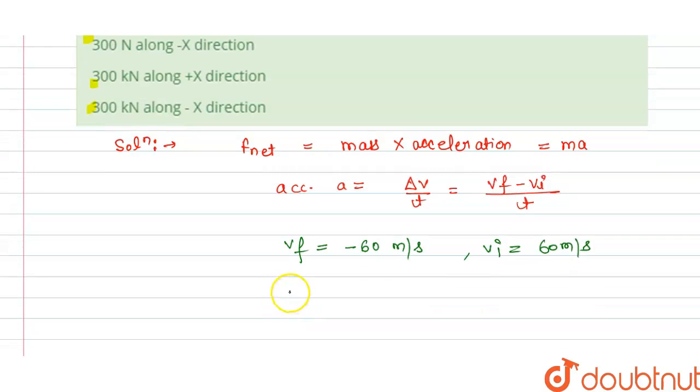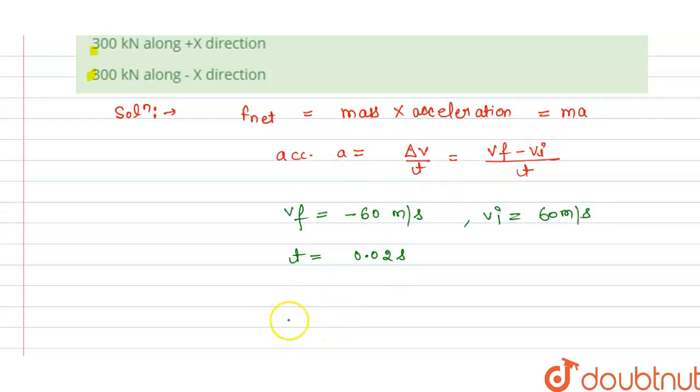If we put the value here, and we have time is 0.02 second. So if we put the value here, we get acceleration A is equal to final velocity is minus 60 minus initial velocity.